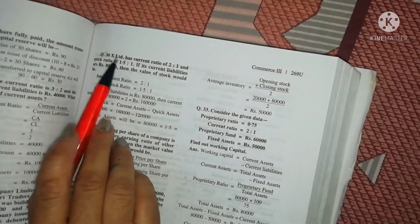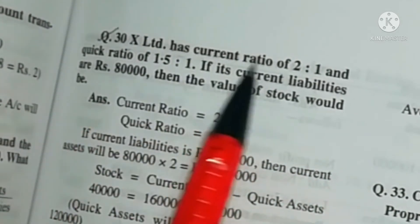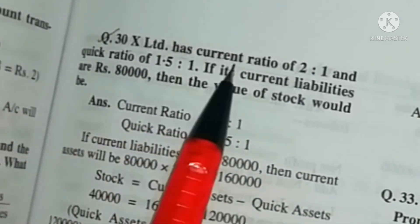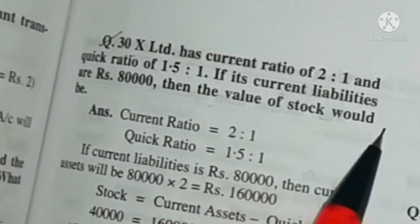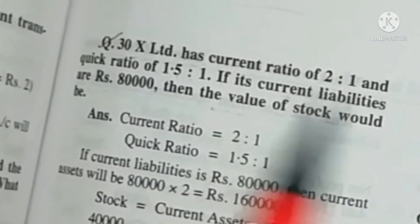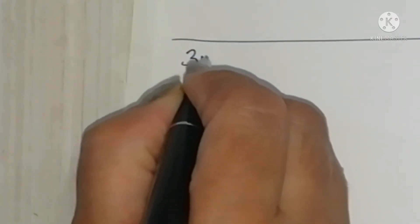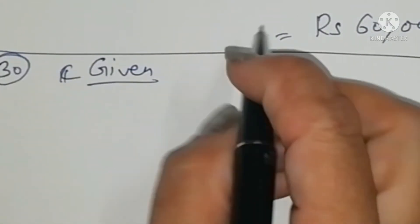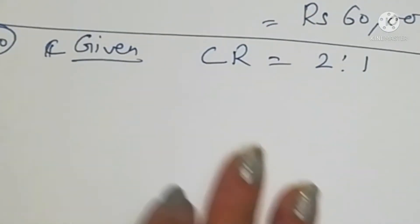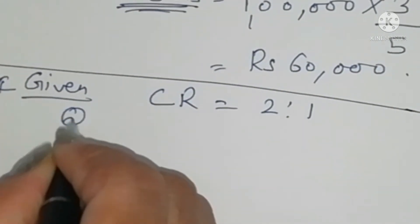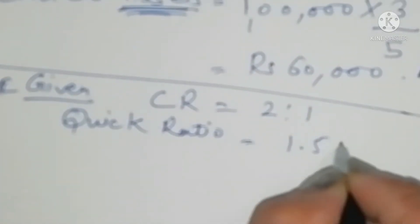Now move to the next question, number 30. X Limited has a current ratio of 2:1 and a quick ratio of 1.5:1. If its current liabilities are rupees 80,000, then the value of stock would be? In this question the company X Limited has current ratio 2:1, quick ratio 1.5:1, and current liabilities of rupees 80,000 are given. With the help of these figures we will find out the value of stock.